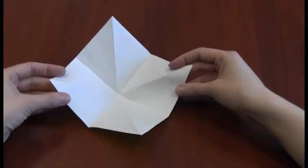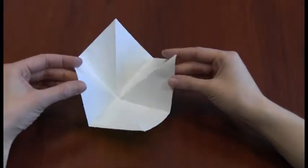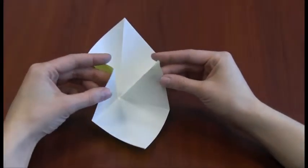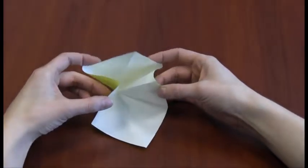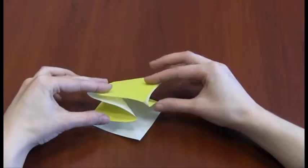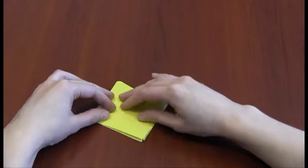Turn the white paper so that it faces you in a diamond shape. Pull the left and right corners of the diamond up and toward each other. At the same time, pull the top corner down until it touches the bottom corner.